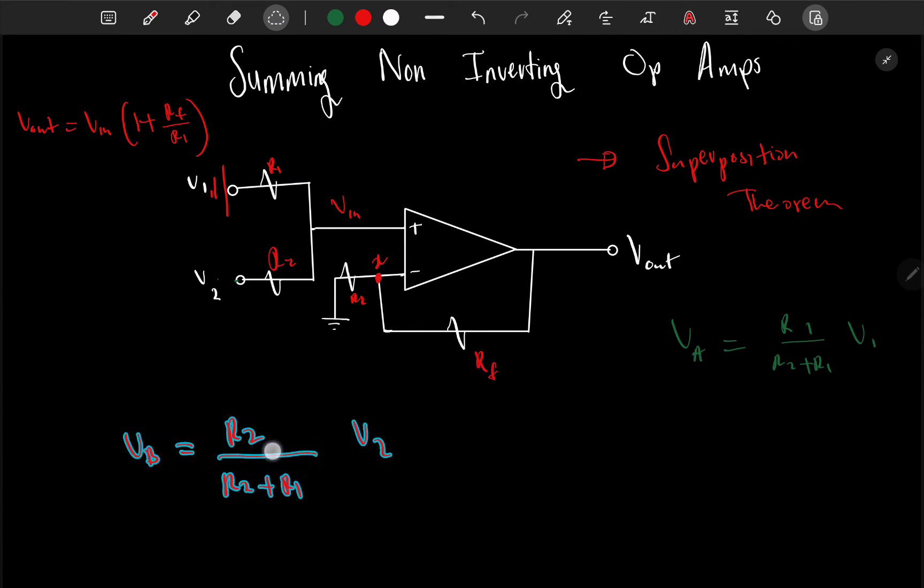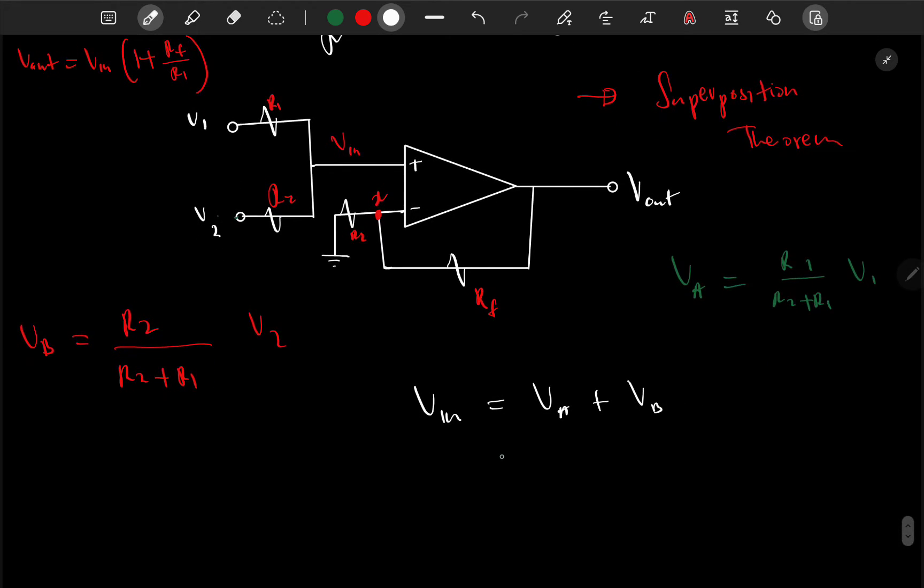And by superposition, V_in which goes here should equal to V_a plus V_b. It's more like we're assuming that this supply is dead and then assume that this one is dead. So for V_in, whatever answer that we get, we sum those answers to give us the actual V_in if they are both in.